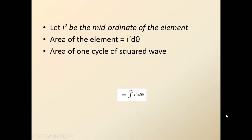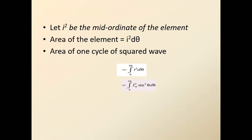Let i² be the mid-ordinate of the element, so the area of the element is i²·dθ. We have found the area for a small element; now we calculate the area for the full square wave. For the full cycle, we integrate from 0 to 2π — we are not taking a half cycle, we are taking the full cycle. So we integrate i²·dθ from 0 to 2π.